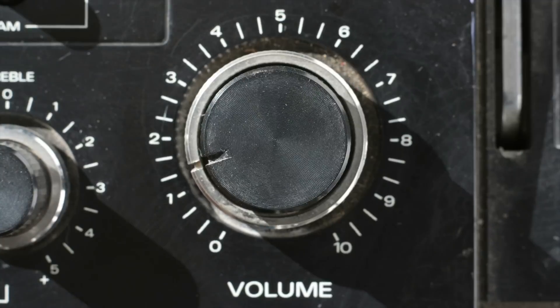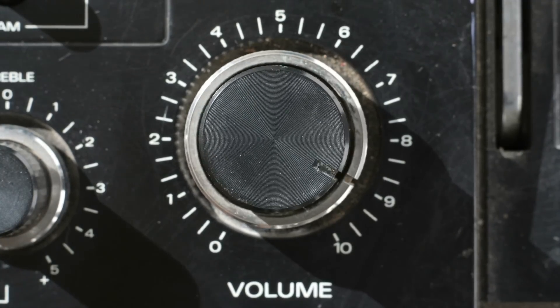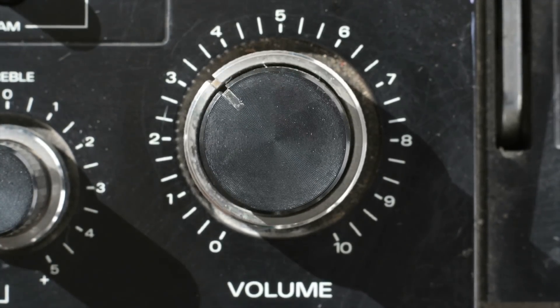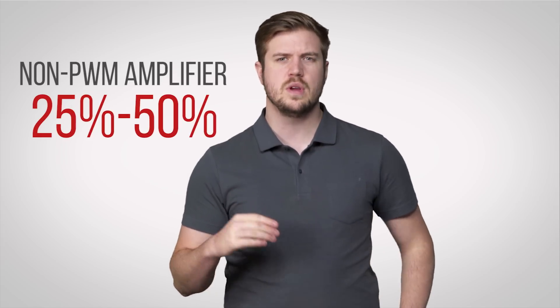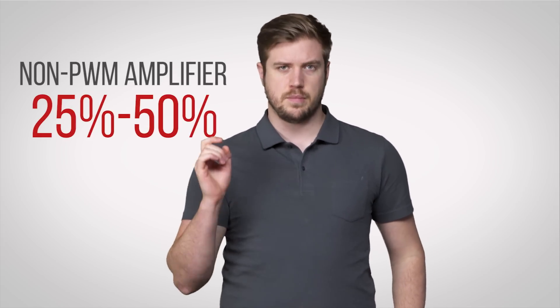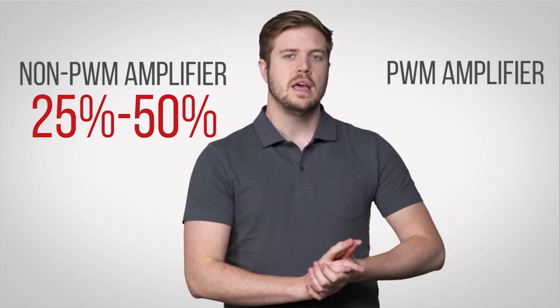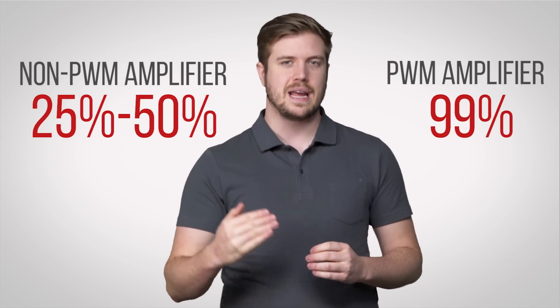PWM is also used in some audio amplifiers, making them extremely efficient. The typical efficiency of a non-PWM amplifier is between 25% and 50%, while a PWM amp can reach efficiencies of 99%.